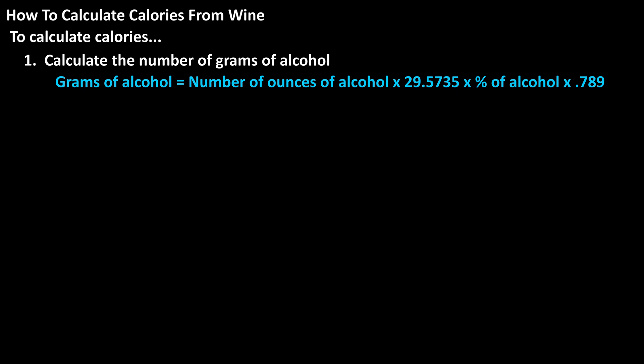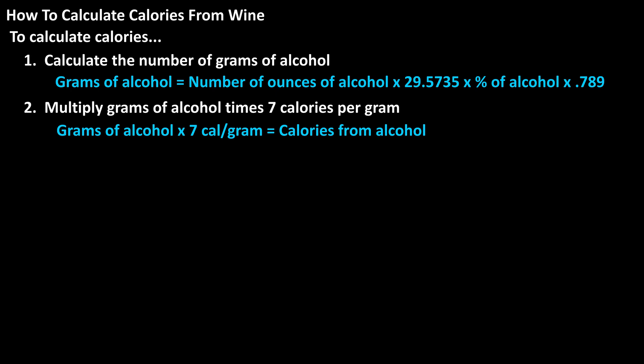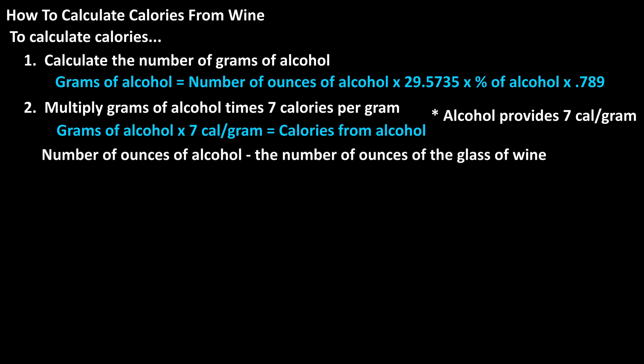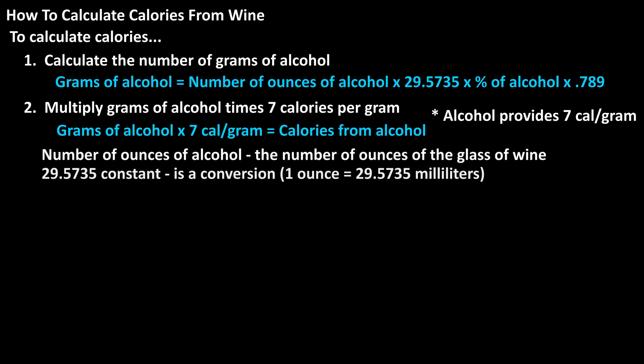Then we take the result from the previous formula and multiply it times 7 calories per gram, as there are 7 calories per gram for alcohol. In the formula, the number of ounces is the number of ounces of the glass of wine, and the constant 29.5735 is a conversion factor, since 1 ounce equals 29.5735 milliliters.